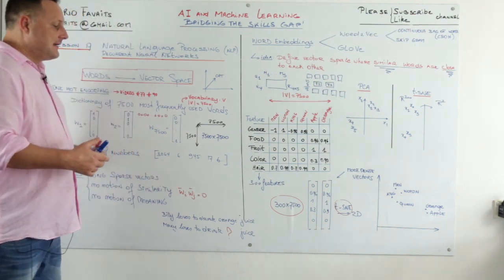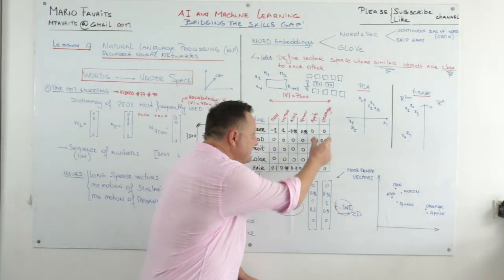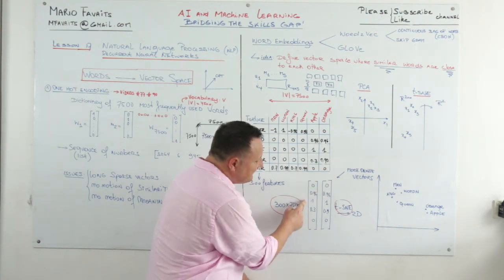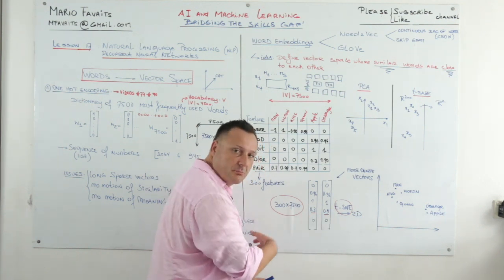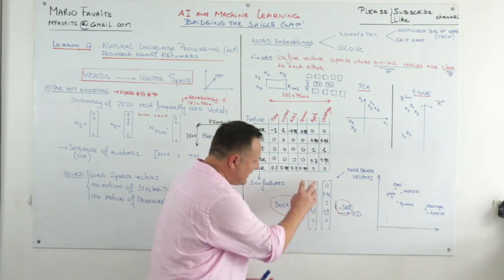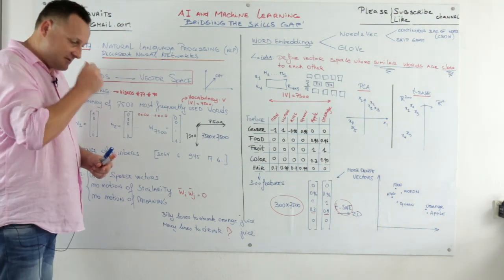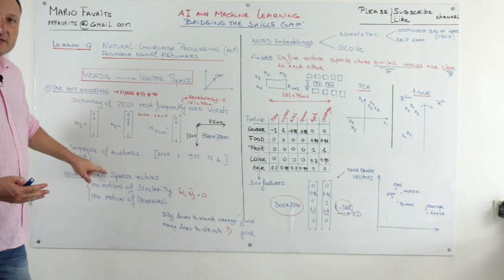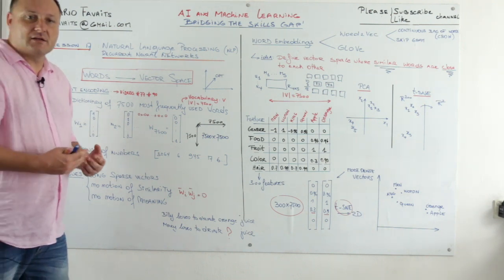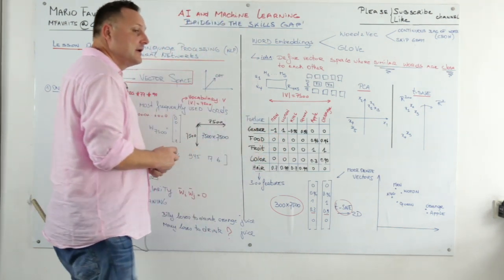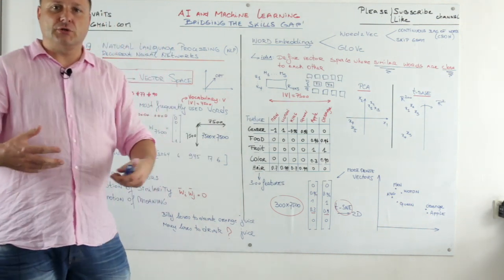If we define about 300 of these features, our matrix becomes 300 by 7,500 — reduced from 7,500 by 7,500, roughly a factor of 20. Taking two fruit vectors, their dot product is close to 1 because the vectors are similar — vectors of length 300. We've solved the similarity issue, made vectors more dense and less sparse, and meaning is integrated through the feature scores.